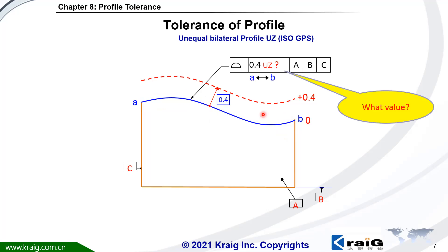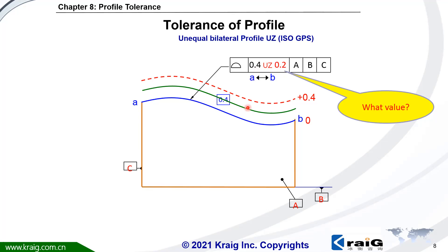Question: if this profile is only allowed outward 0.4 with no inward, which value should you put here? As we said, this value means the original nominal surface moves outward first. Since you move outward first and then from the new nominal surface apply plus/minus half, or plus/minus 0.2, that means you put 0.2 after UJ. You move outward 0.2 from here, then apply plus/minus 0.2, and you get a range from 0 to plus 0.4.